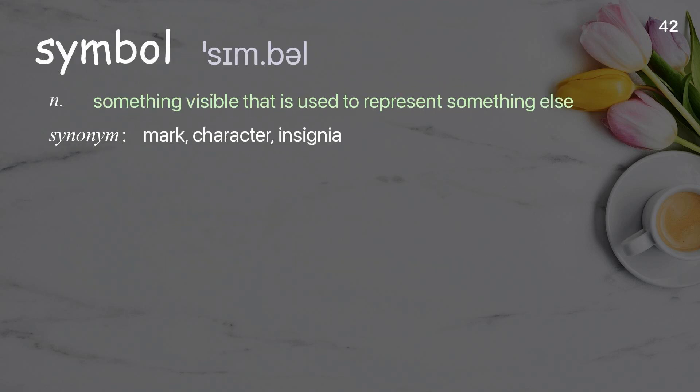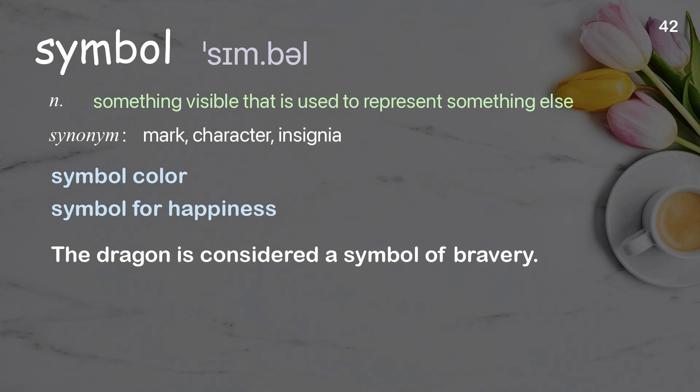Symbol: something visible that is used to represent something else. Examples: symbol color; symbol for happiness. The dragon is considered a symbol of bravery.